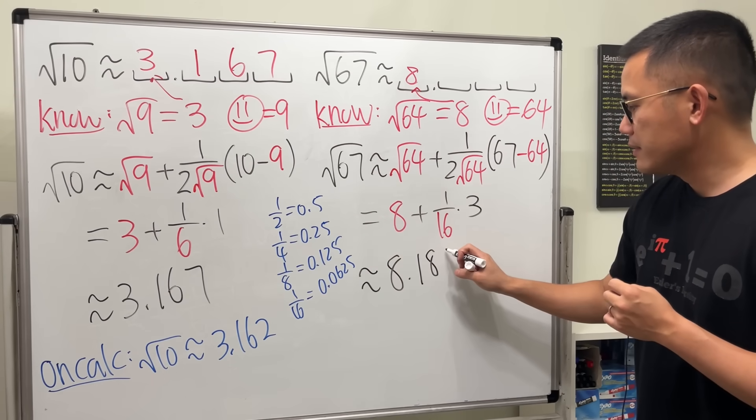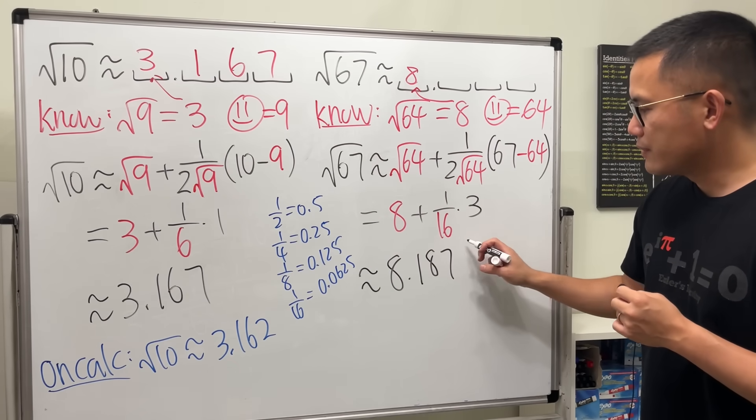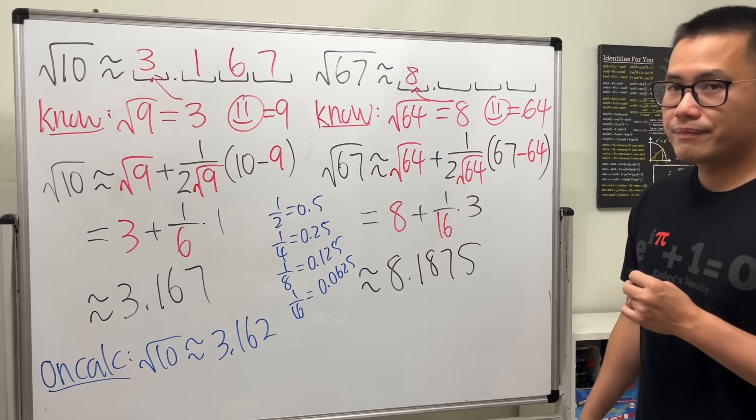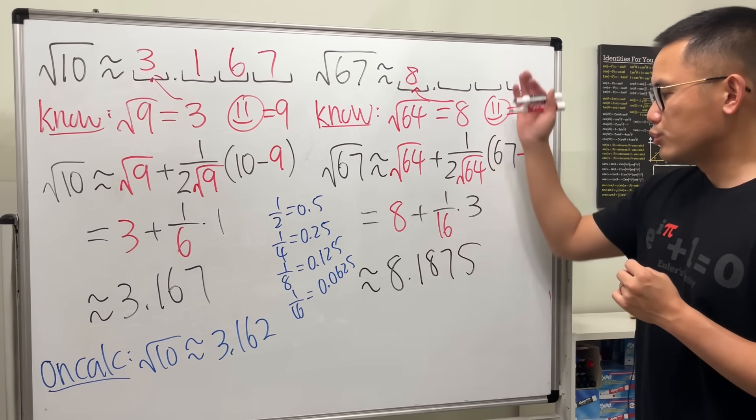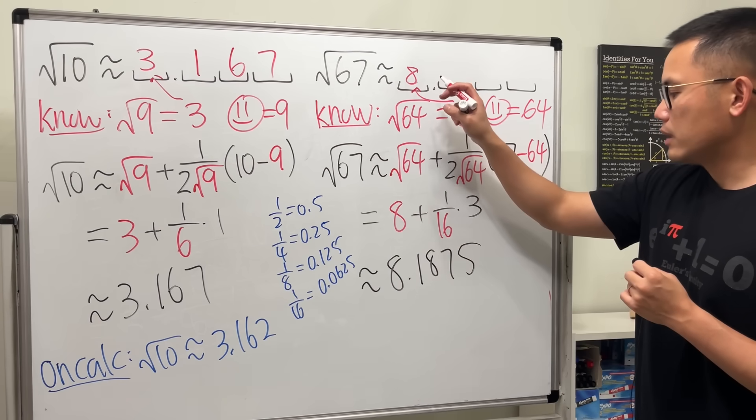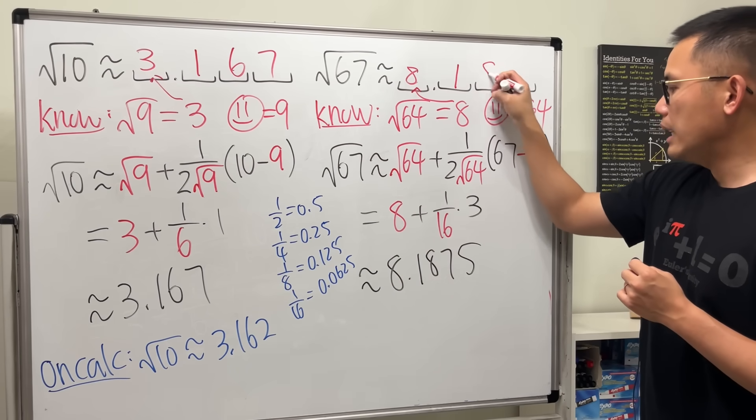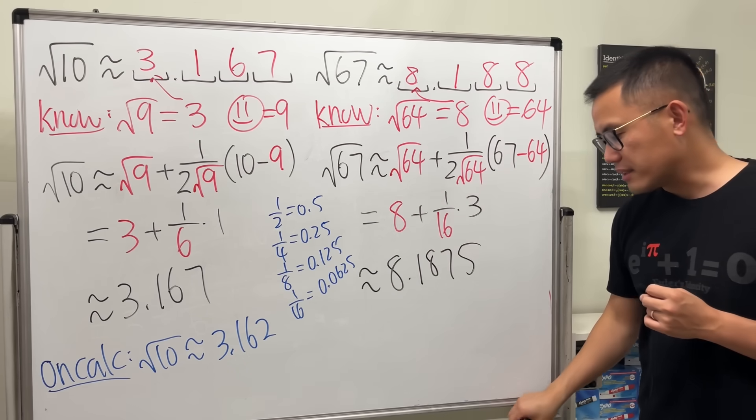So that will be 1, 8. And then 7, 5. 5, right here. Yeah. And if you want to just use three decimal approximations, then we get 8.188. Something like this.